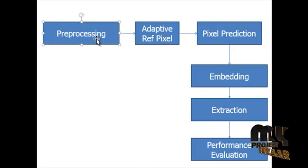This is the flow of our project. It consists of six modules: preprocessing, adaptive reference pixels choosing, pixel prediction, embedding, extraction, and performance evaluation.